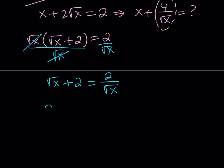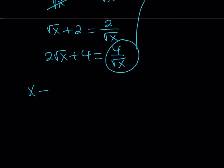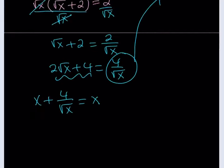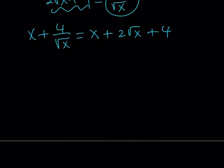So if I double both sides, I get 2 root x plus 4 is equal to 4 over root x. And this is exactly what I want to use over there. So my expression is x plus 4 over square root of x. Now, I can replace 4 over square root of x with this because that's what it's equivalent to. And that gives us something nice. You'll see in a little bit. So I'm going to replace 4 over root x with 2 root x plus 4. And now this brings us the original expression.